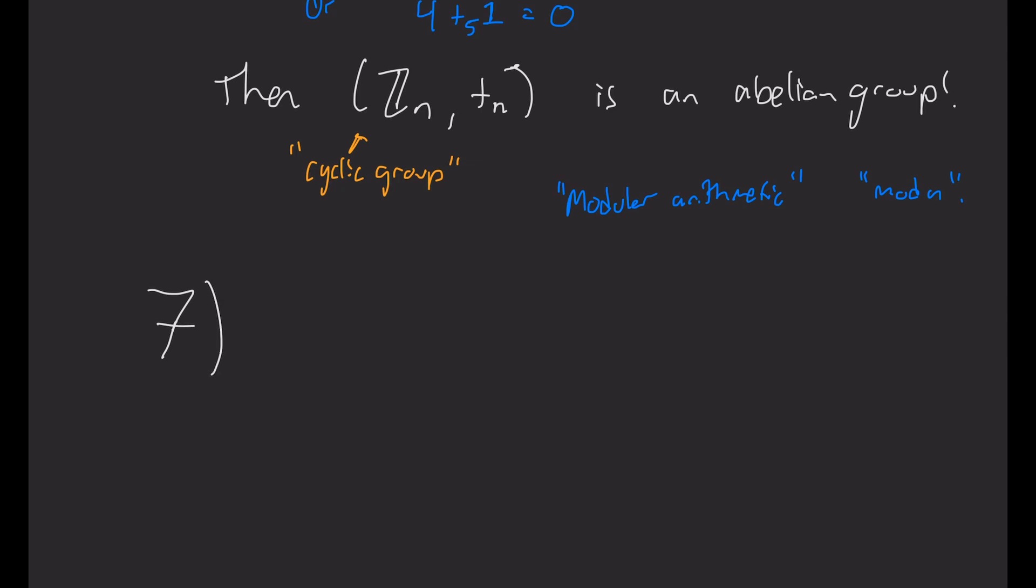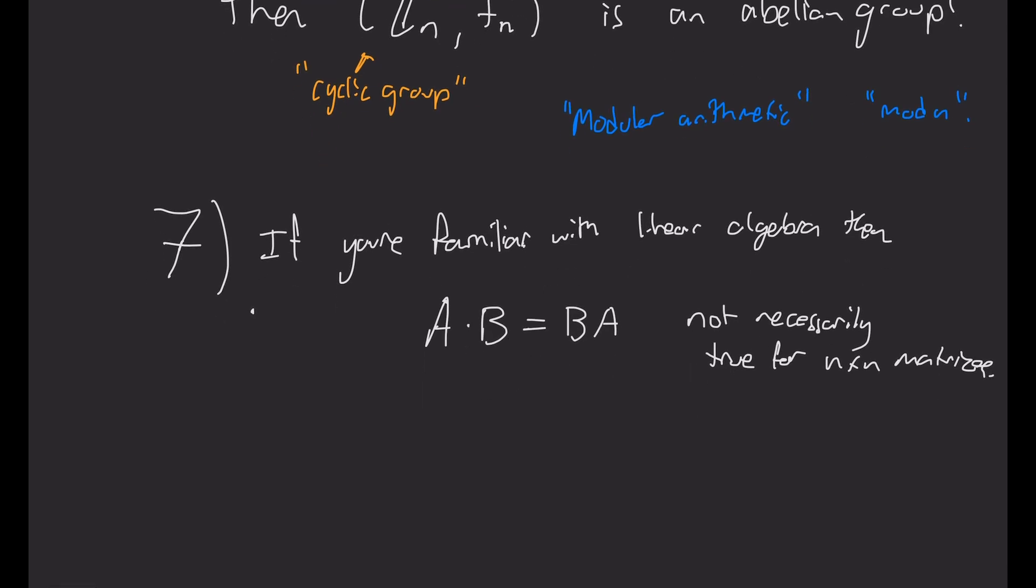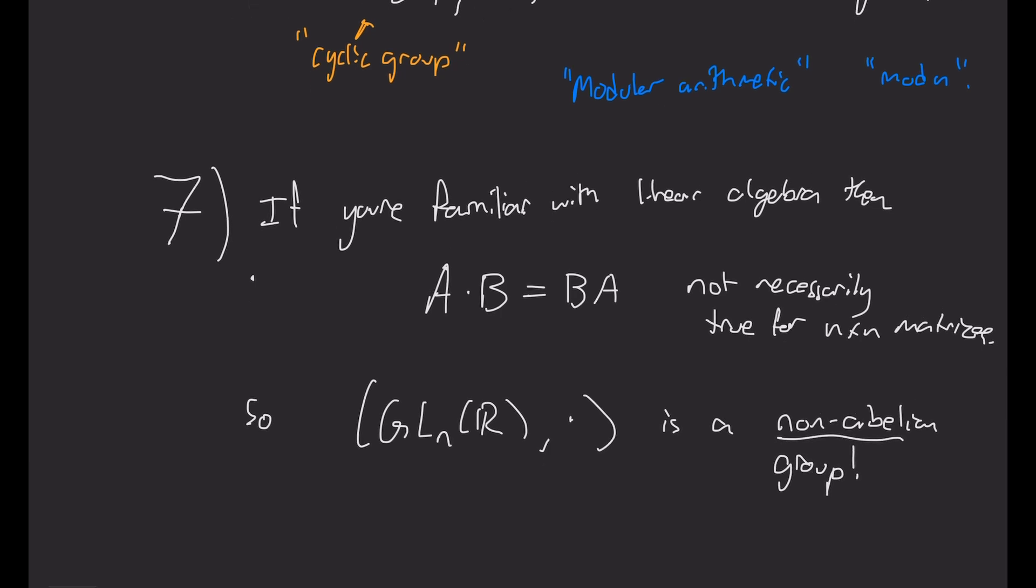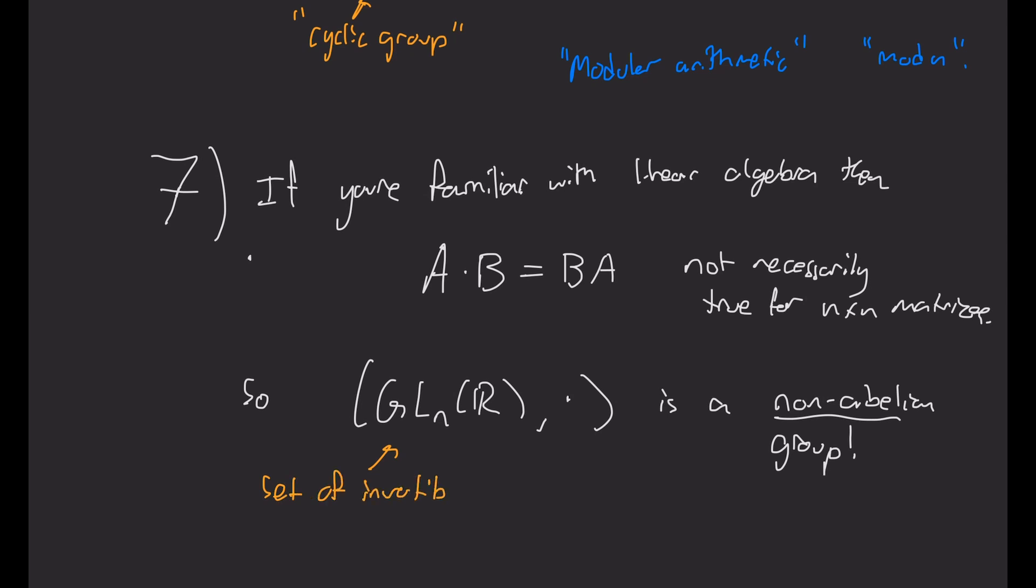One last example. Again, if you're familiar with linear algebra, then you might have dealt with multiplying matrices. And in particular, you might have encountered the idea that if I multiply two matrices, A times B, I don't always get that that's equal to B times A. Sometimes I do, but it's mostly not true. So it's not necessarily true that A times B is equal to B times A. So in fact, this set GL_n of R with this multiplication is a non-abelian group. So we've seen all abelian groups up until now, but this is a non-abelian one. So it's not commutative. So this GL_n of R is the set of invertible n by n matrices with real entries. And the multiplication I'm taking is the matrix multiplication. So you can check that that's a nice group as well.